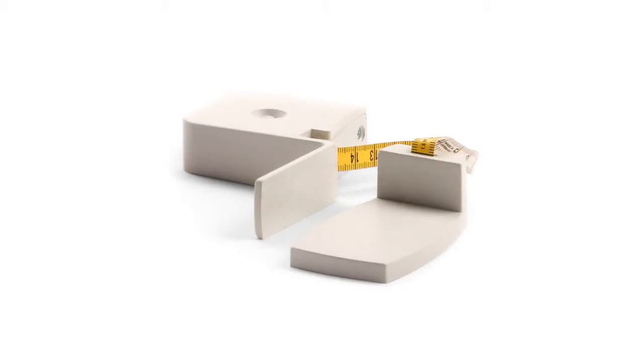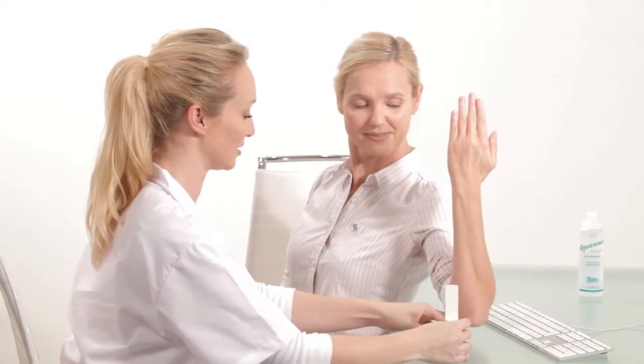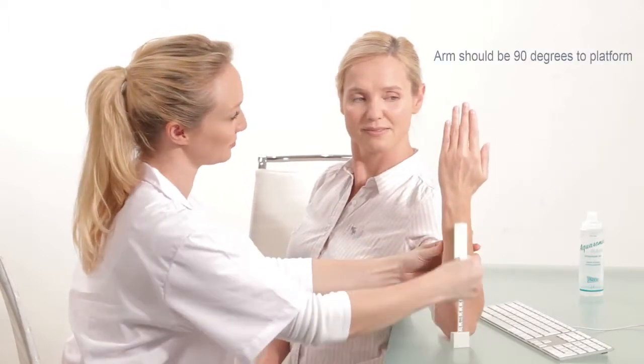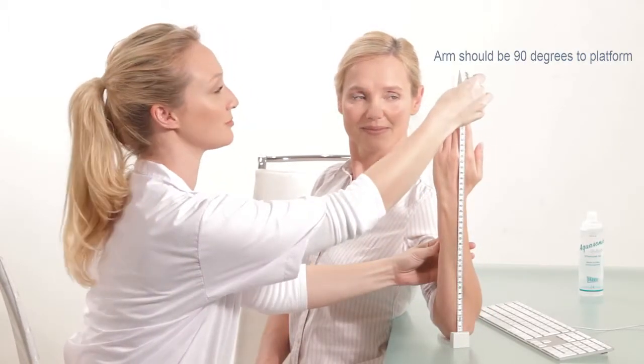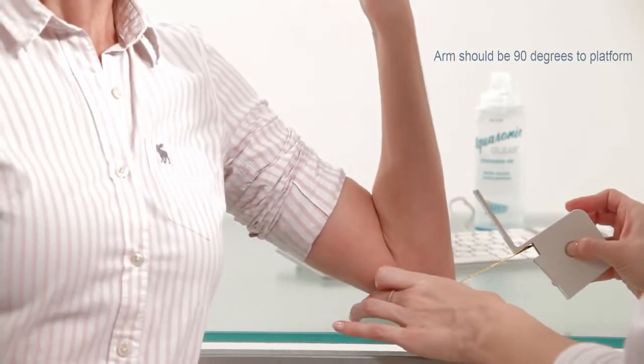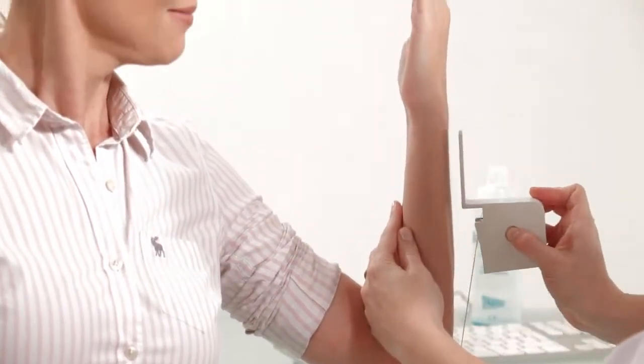Use the gauge to determine the measurement location. Place the elbow of the subject's non-dominant arm on the gauge platform. Make sure the subject's arm is at a 90 degree angle to the platform and the palm is facing the subject.